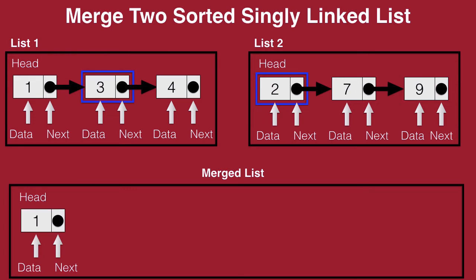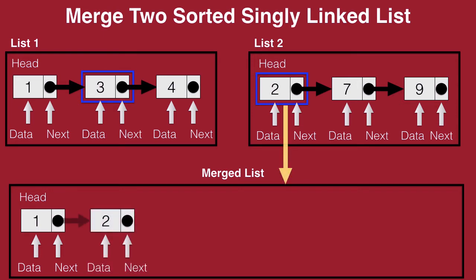But this time, we see that the node in list 2 is lesser than the value in node in list 1, which is 2 is less than 3. So this time, we bring down 2 into our merged list and then we establish a connection from the next of 1 to 2. Now that we have brought down 2, we advance the node in list 2. So list 2 now has the data with node 7.